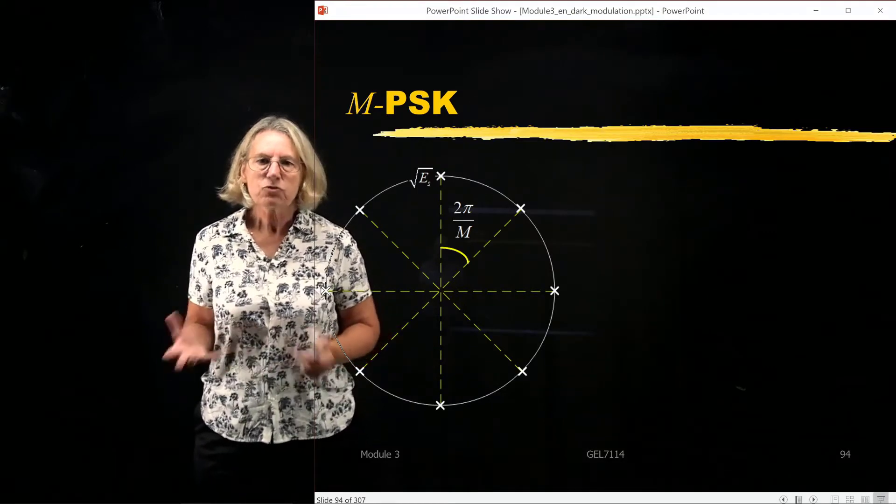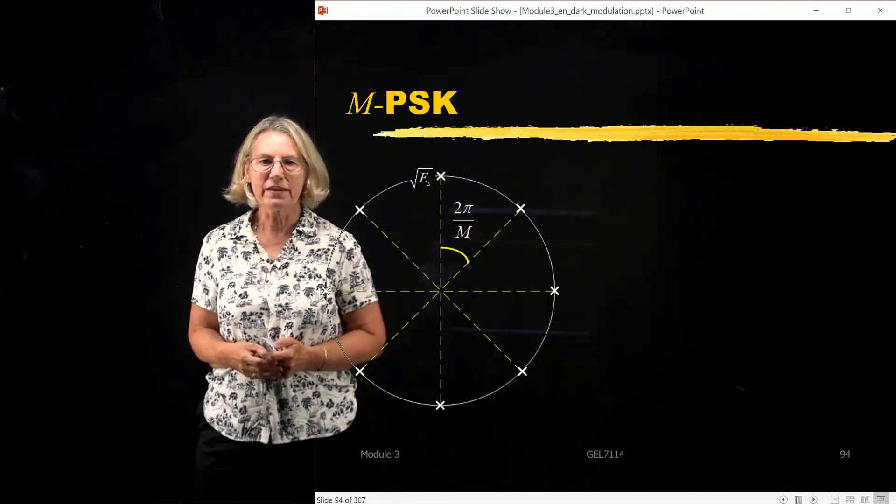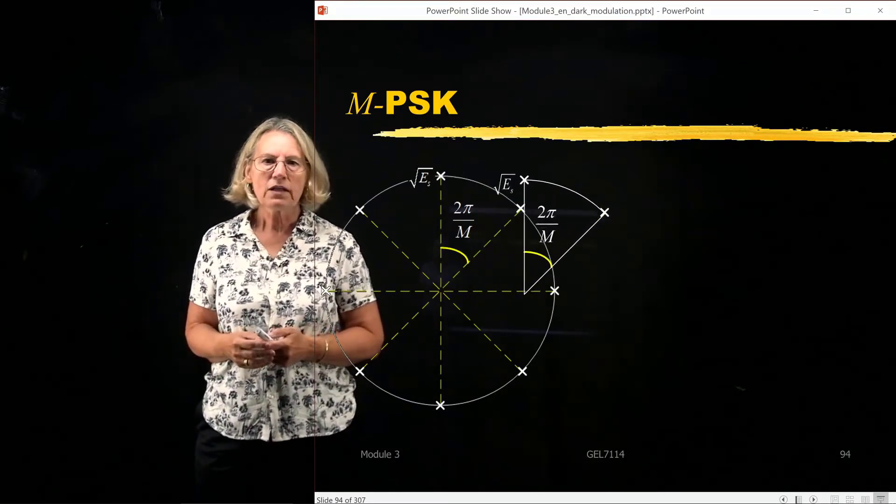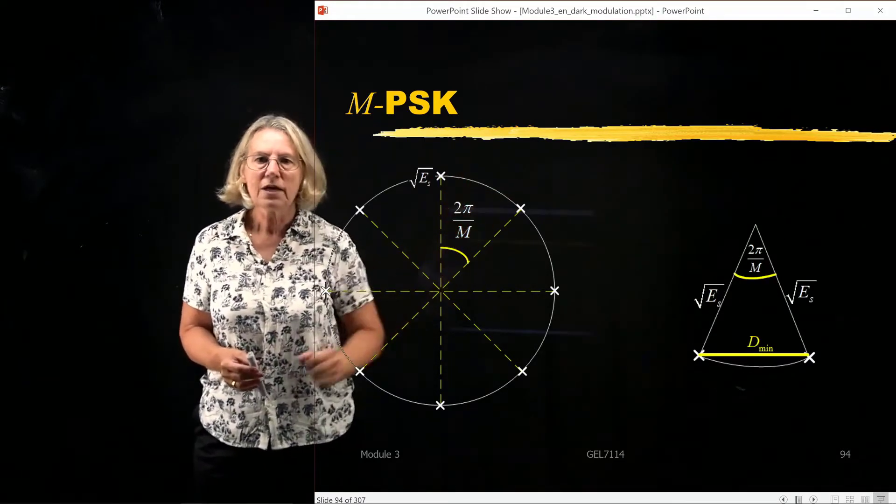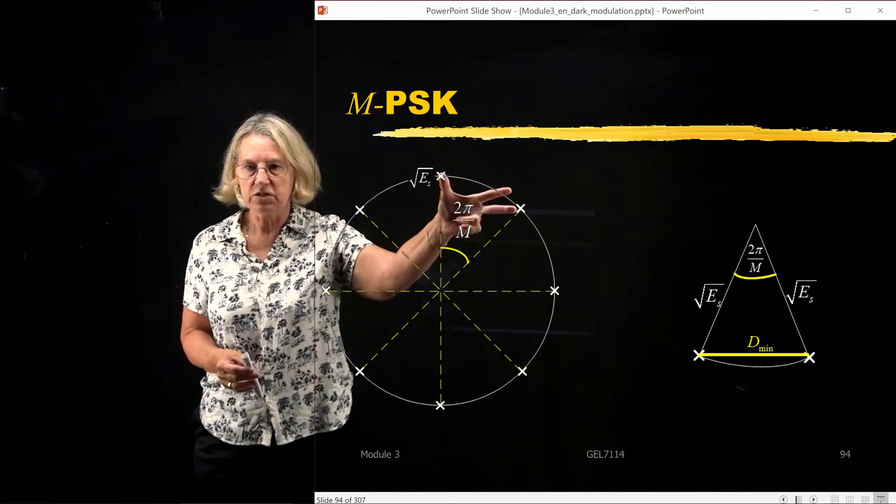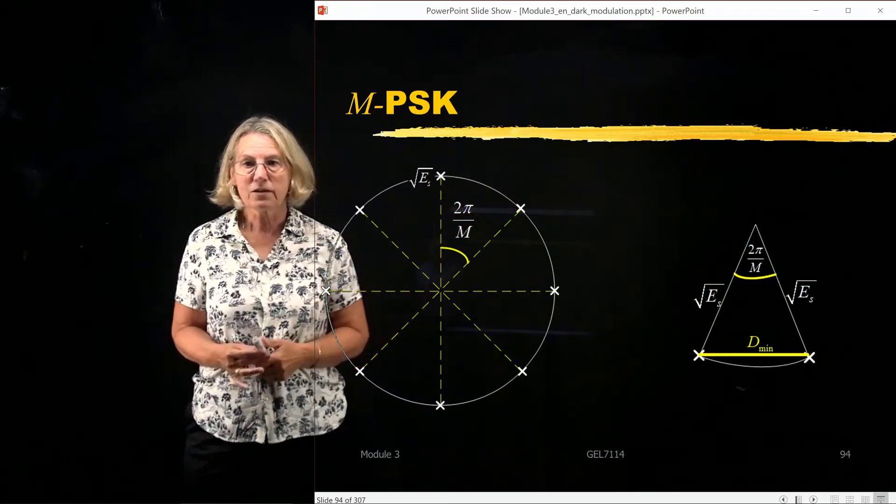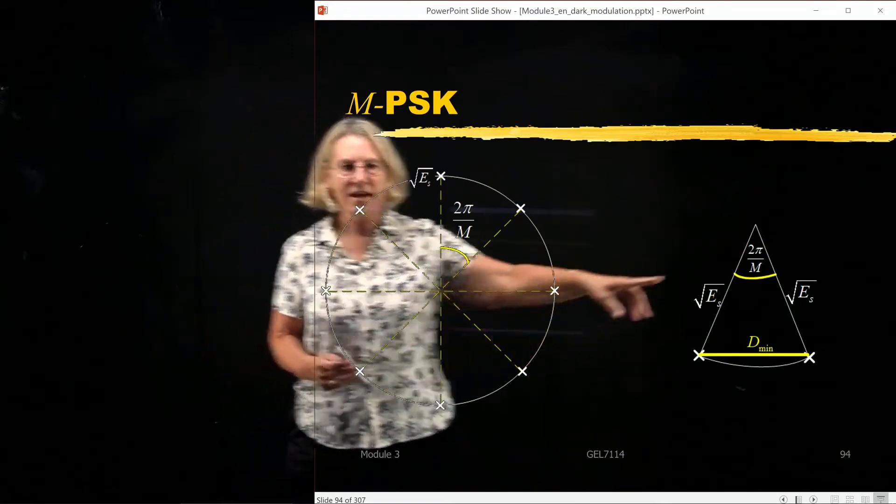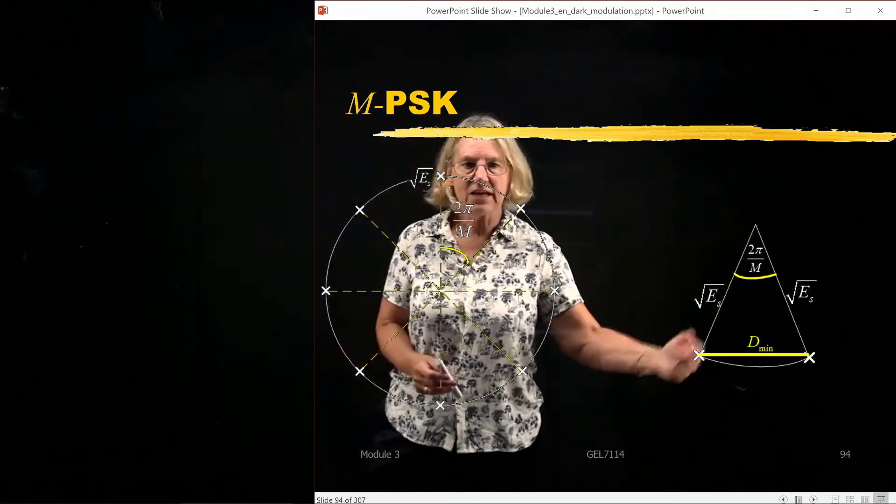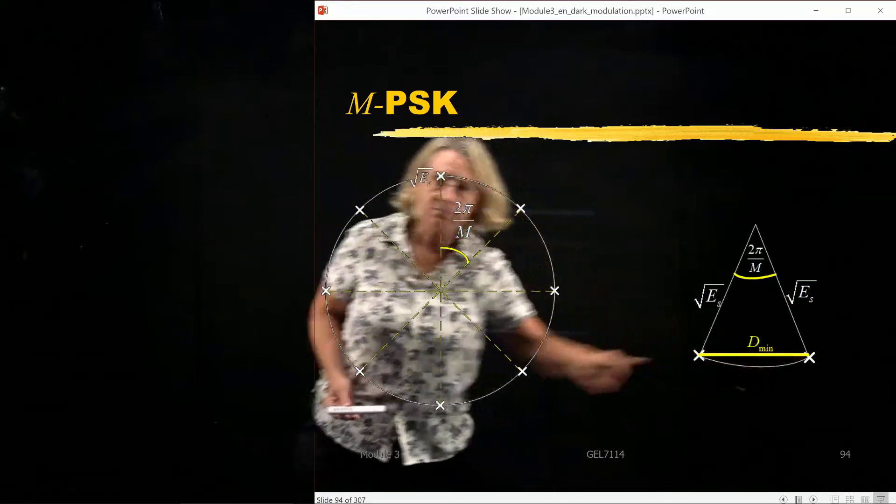So I have to calculate the minimum distance. That is the key factor in the equation for the probability of error. So how do I find the minimum distance? Well, I'm going to take just one slice here and look at this part of the circle because the minimum distance is clearly going to be between adjacent symbols. How far apart are these adjacent symbols? So I have to do a little bit of geometry. So I take any one of these and I know that the angle between them, by construction this is M-PSK, so this angle is 2π over M. I know that they're at equal distance from the origin, so this is the square root of ES. And now I want to find the distance between them.